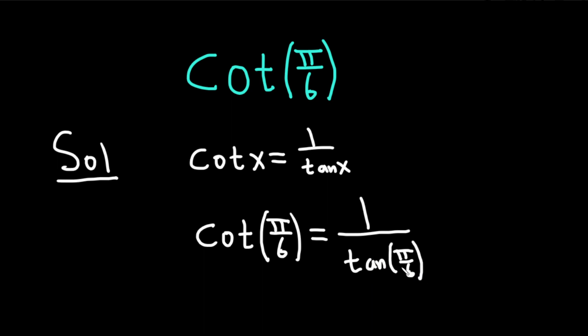So far it's pretty easy. The hard part now is to know the tangent of pi over 6. That's just 1 over the square root of 3. So this is equal to 1 over 1 over root 3.